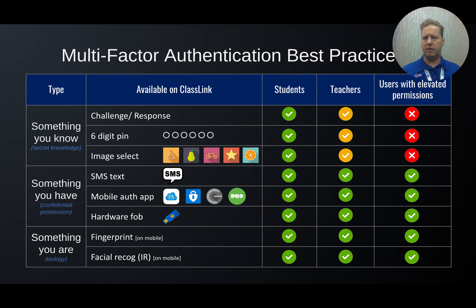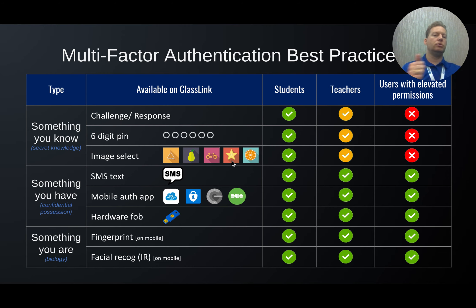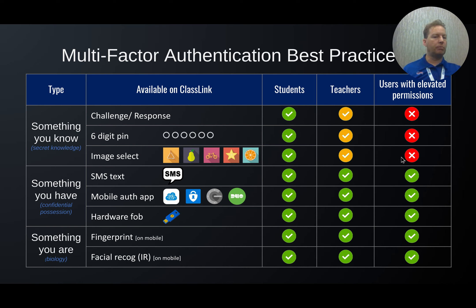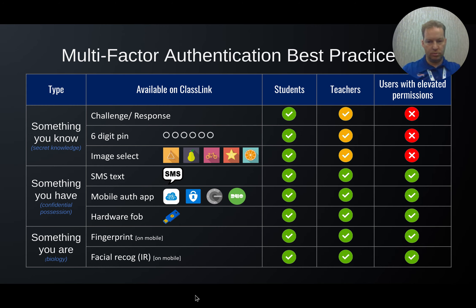On ClassLink's MFA methods slide: the lowest level — something you know — is the challenge-response with a six-digit PIN, or for younger kids, selecting the correct image, perhaps combining choosing your teacher's name and your logo. That low-level option is not available for users with elevated permissions like tech directors or building principals. The 'something you have' and 'something you are' options — including facial recognition and biometric fingerprint — are available across all account levels. This is ClassLink's MFA landscape as of November 2022, and it will keep evolving.